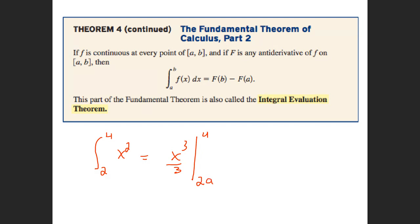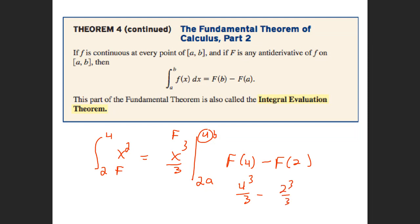This is my a value, this is my b value. If this is small f, this is large F. So what they're saying is F of 4 — this is my value of 4 — minus F of a, which is 2. That gives me my answer. So F of 4: if I put 4 in here, minus 2 to the third over 3. If I work that out, that will be my answer.